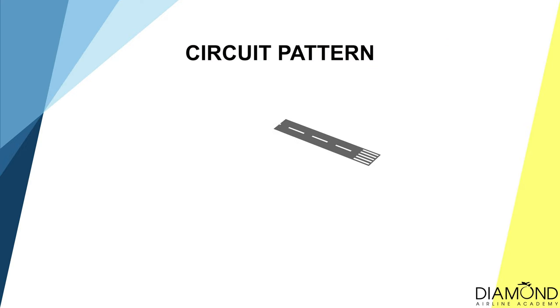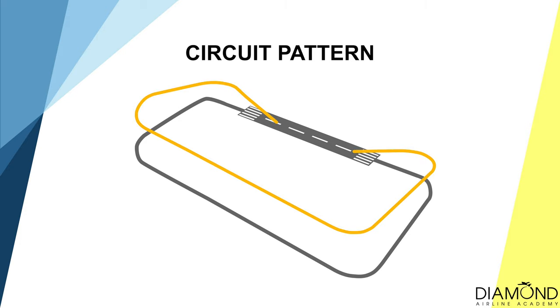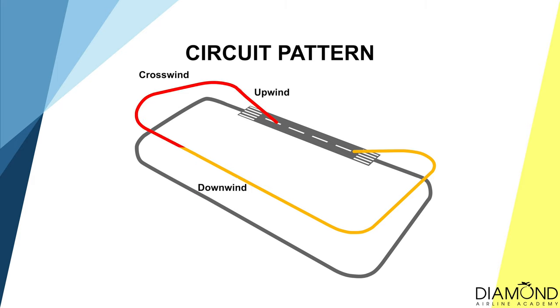A standard circuit is in an anti-clockwise direction, or left-hand turns. However, there are plenty of airports where the right-hand turn is the norm. The standard circuit altitude is 1,000 feet above ground level, and a circuit can be dissected into five different parts: upwind, crosswind, downwind, base, and final.